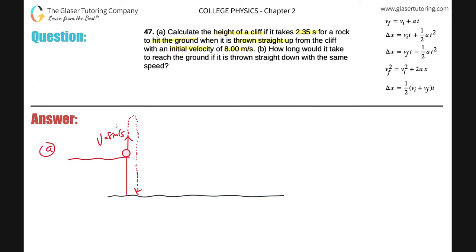We have the velocity listed, and the problem also tells us the time it takes to go from the top of the cliff, get thrown up, and then go straight down. The time is 2.35 seconds, and the initial velocity is 8.00 meters per second. The zeros don't affect calculations but they do influence significant figures. Now we're looking to calculate the height of this cliff.